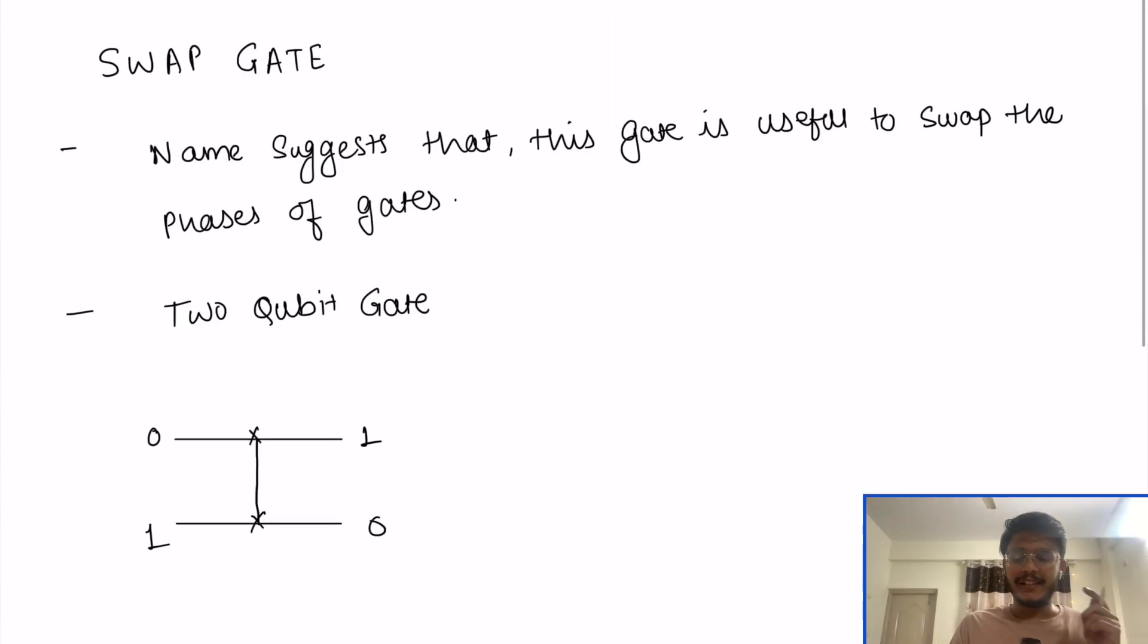So, swap gate. The name itself suggests that this gate is useful to swap the phases of two gates. Of course, this is a multi-qubit gate, so it involves two different qubits. Once you apply this gate on two different qubits, it will swap the current phases of those qubits.